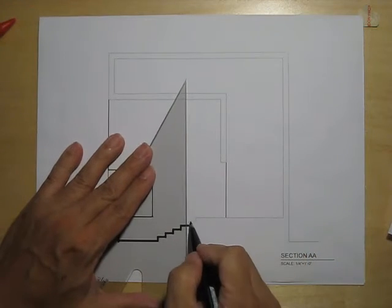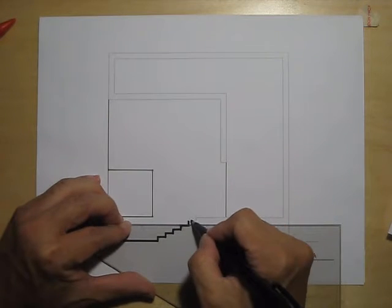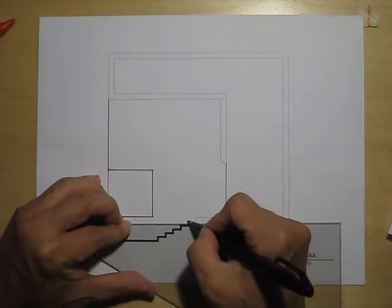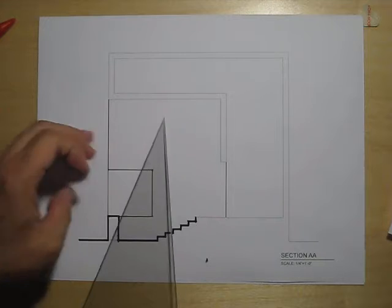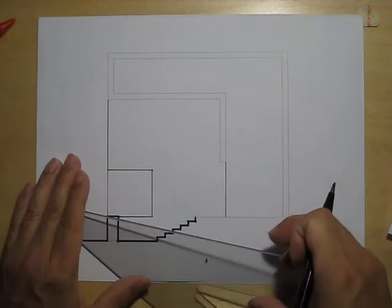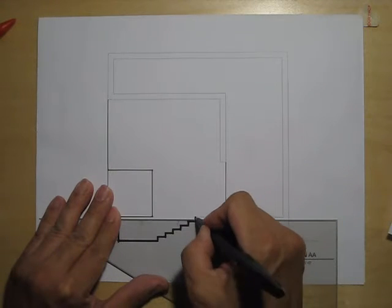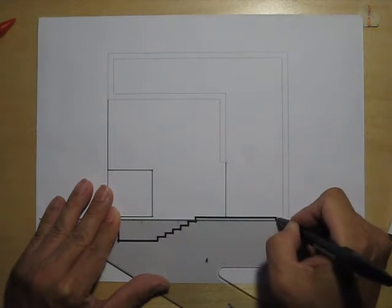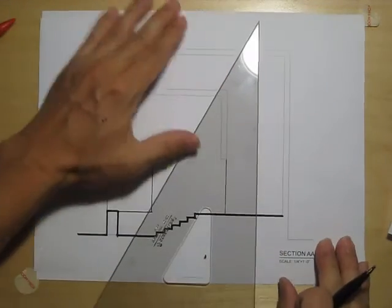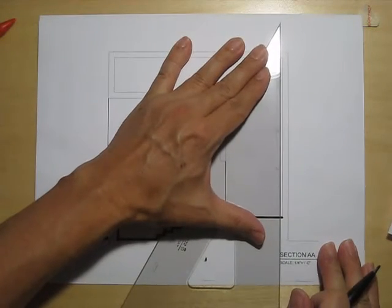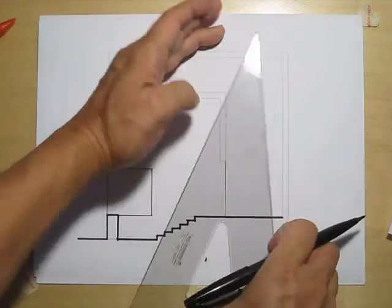However, since this is just a demonstration of which part is being cut and which part is not, to give the line weights, I am breaking another cardinal drafting rule and just demonstrating as such. Okay, so that becomes a floor, and then this comes right here.